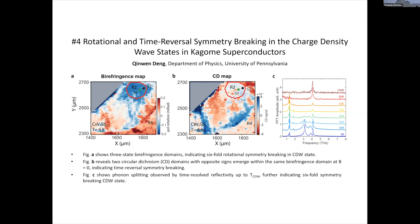I'm Qinwan Dan from the University of Pennsylvania and today I'm going to show our recent research on kagome superconductors — the alkali metal vanadium antimony AV₃Sb₅ samples. We first obtained birefringence maps which show the onset of non-zero birefringence throughout the whole sample, and there are three-state birefringence domains marked with red, white, and blue. This indicates the six-fold rotational symmetry is broken in the charge density wave state. Magnetic circular dichroism measurements also show opposite signs of domains within a single birefringence domain region, indicating time-reversal symmetry is broken.